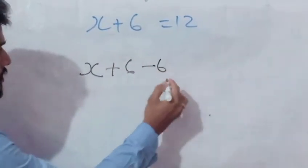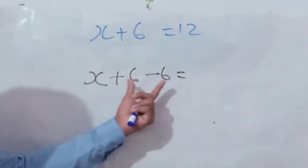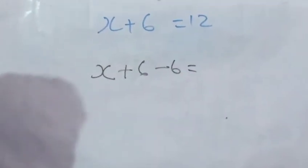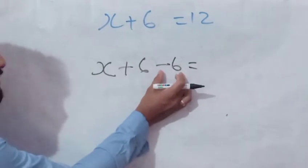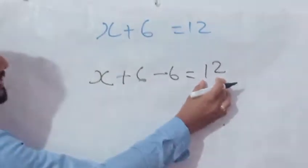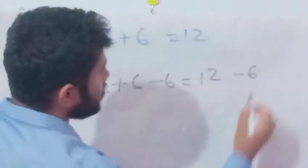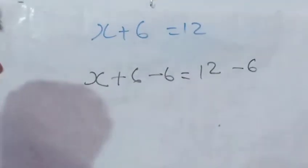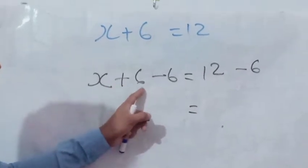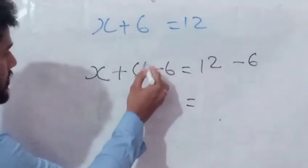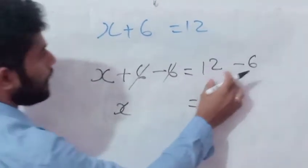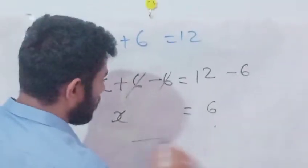Which value are we adding now? Minus 6 we are adding. The same value you have to put here also. 12, here we also put minus 6. Then X + 6 - 6, plus 6 and minus 6 will cut. Then it will become X = 12 - 6 = 6.